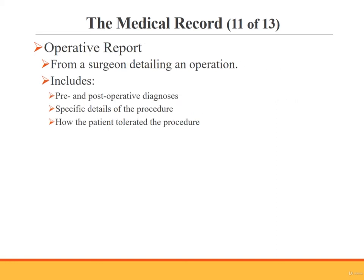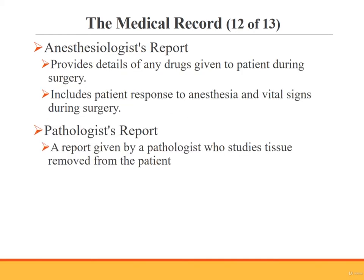An operative report is written by a surgeon and details an operation, giving the pre- and post-operative diagnoses as well as specific details of the procedure and how the patient tolerated it. The anesthesiologist report gives details of any drugs given to the patient during surgery, how the patient responded to those drugs, and the patient's vital signs during surgery. The pathologist report is given by a pathologist who studies any tissues removed from the patient.